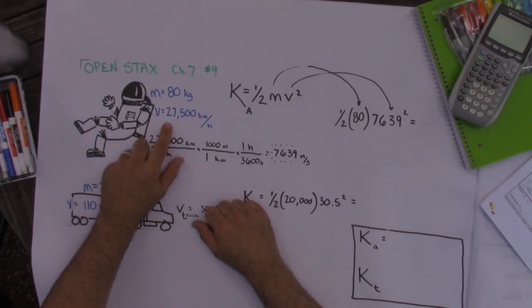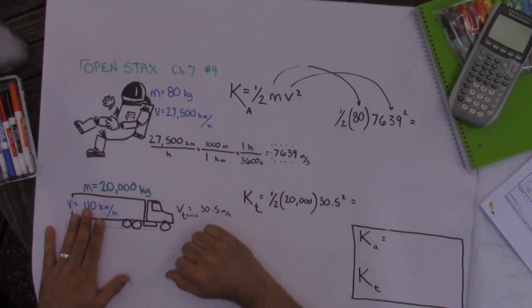They told us the velocity of the astronaut in orbit was 27,500 kilometers per hour and the velocity of the truck was 110 kilometers per hour.